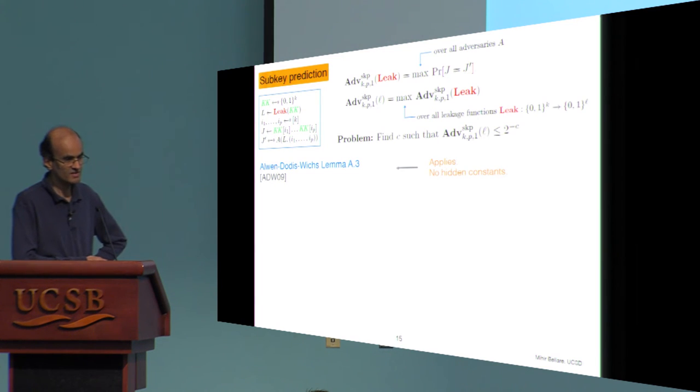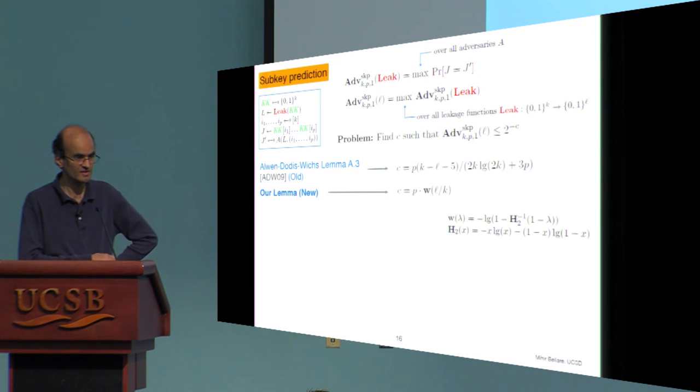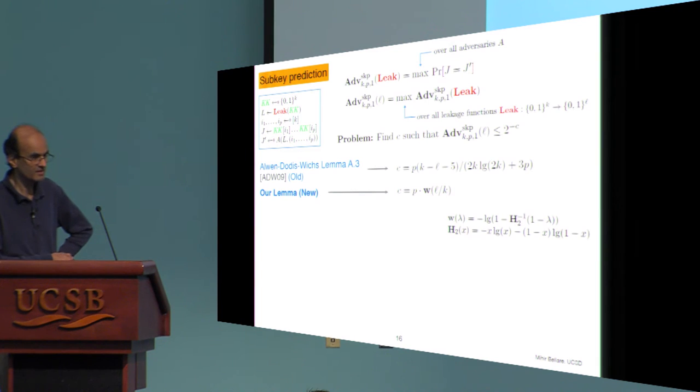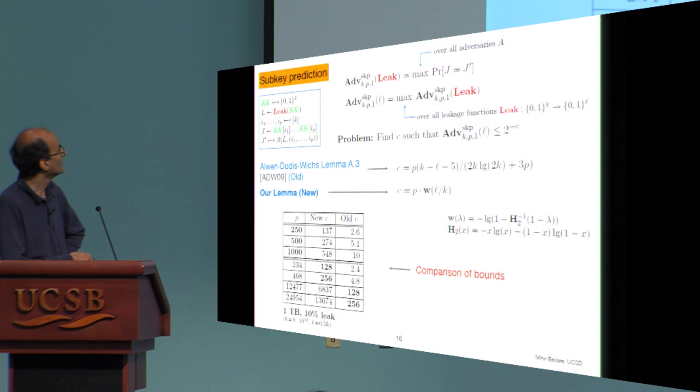And the difference or novelty of our work is to give an analysis with a better value of that constant. So if you look at their lemma and plug in our numbers, you get this formula for what that C is. And this represents the formula that we prove. Again, this is the functions that correspond to it.